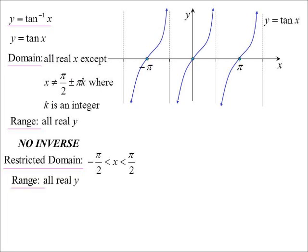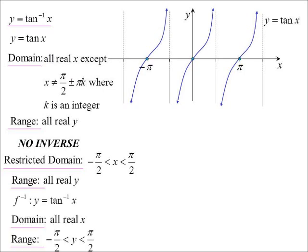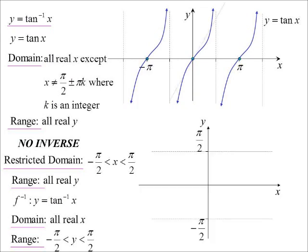And so my new function, the inverse tan function, the domain will be all real x. Range will go from minus pi on 2 to pi on 2. So those vertical asymptotes become horizontal asymptotes, and I've got a tan curve on its side. So there are our three inverse trig graphs.